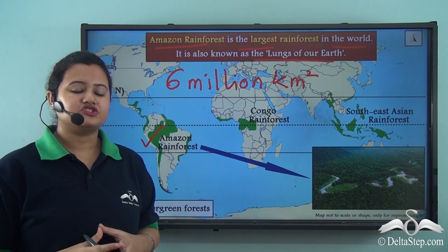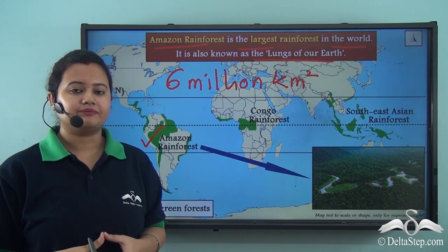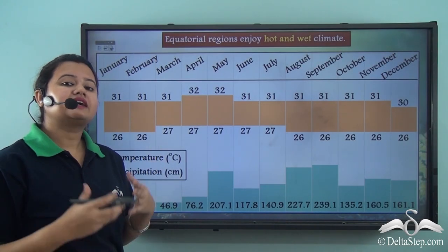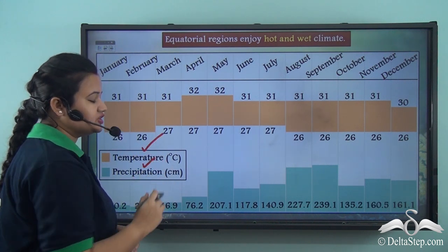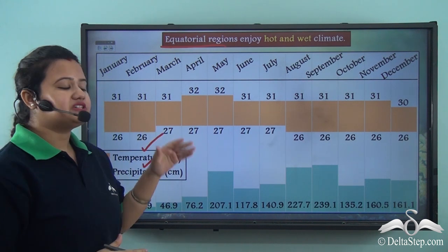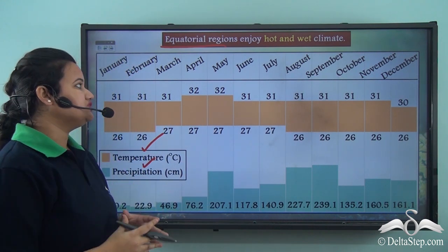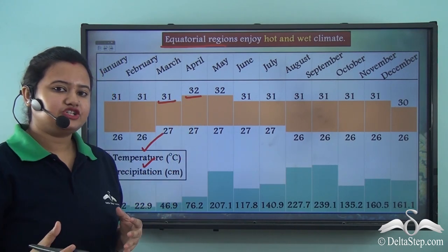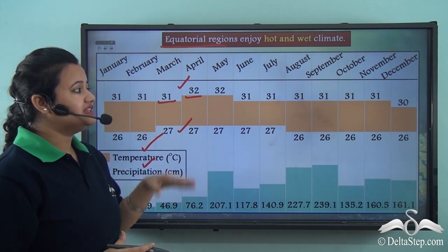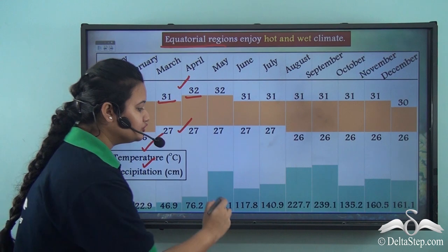As the name suggests, these rainforests are highly influenced by the amount of rainfall and climatic conditions prevailing in this region. This chart shows the temperature and precipitation conditions of the equatorial region where the rainforest exists. We can see that this region experiences a very high temperature throughout the year — the average temperature ranges between 31 to 32 degrees Celsius — with minimum variation in day and night temperatures. Also, it receives a high amount of rainfall throughout the year.